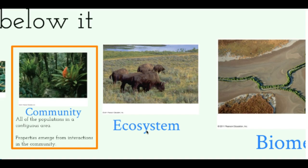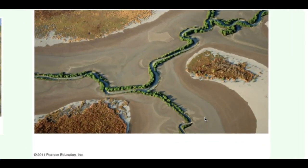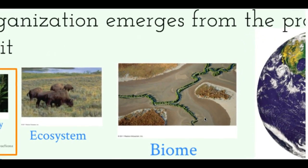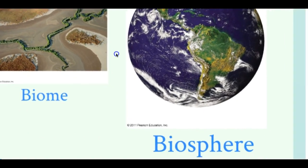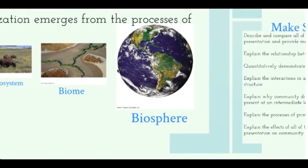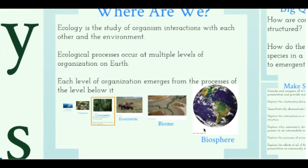Abiotic factors include things like soil, the pH level of the soil, the amount of minerals in the soil, and how the climate works within the area. The next level is a biome, which is similar to an ecosystem but bigger — for example, a coral reef is an ecosystem, but the ocean is the biome. And then the largest level is the biosphere, which is our Earth. You need to know the differences between each level and which is smaller or larger.